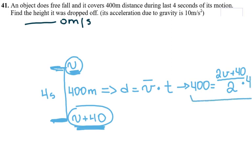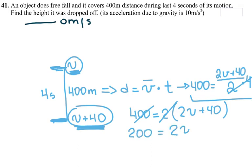So if I simplify this, I will have 400 equals 2. 4 divided by 2 gives me 2. And I still have 2V plus 40. Then I divide both sides by 2. So I divide this side by 2 and this side by 2. I get 200 is equal to V plus 40. Then I have V is equal to 160 divided by 2. So that is 80 meters per second.